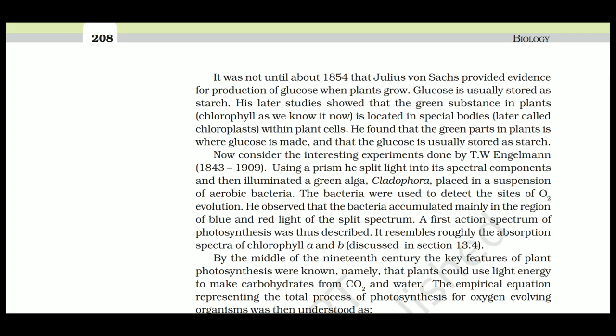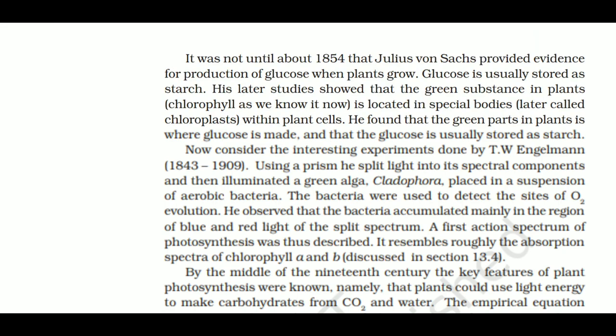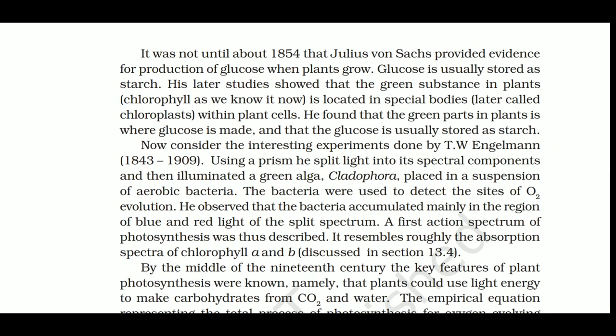Not until about 1850 did Julius von Sachs provide evidence for the production of glucose when plants grow — glucose is usually stored as starch. His studies showed that the green substance in the plant, chlorophyll as we know it, is located in special bodies we call chloroplasts. Inside the chloroplast the chlorophyll is found, mostly in the mesophyll cells of the green leaf. He found that the green parts of the plant are where glucose is made and that glucose is usually stored as starch.